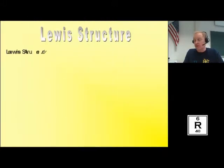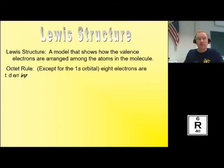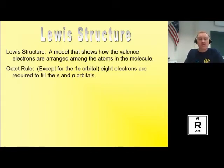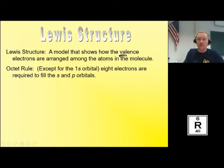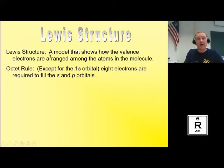So let's go into how to illustrate this. We do this with a model called the Lewis structure, or Lewis dot structure. This is a model that shows how the valence electrons are arranged among atoms in a molecule — not all the electrons, just the valence electrons. If you don't remember what that is, go back a few topics to when we talked about electron diagrams. Valence electrons are the outermost electrons. Those electrons on the outermost shell are really what drives the chemistry of different atoms, their behavior, and their chemical properties.